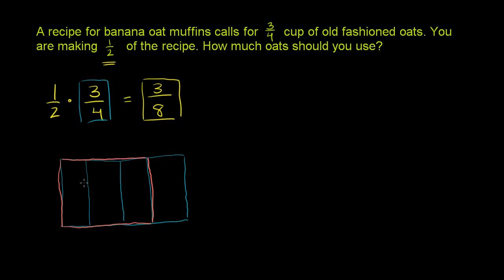Now, you want half of this, right? Because you're going to make half of the recipe. So we could just split this in half. Let me do this with a new color. So you would normally use this orange amount of oats. But we're going to do half the recipe. So you'd want half as many oats. So you would want this as many oats.